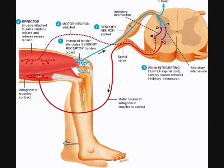Next we're going to talk about the tendon reflex. The tendon reflex is kind of the opposite of the stretch reflex in the effect that instead of responding to an excessive stretching of the muscle, this reflex responds to excessive contraction of the muscle. And instead of resulting in a contraction, it results in a relaxation. So this is an inhibitory reflex.